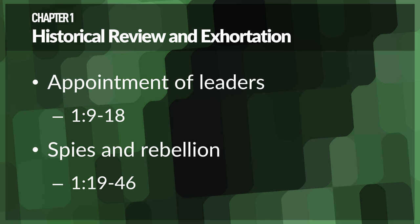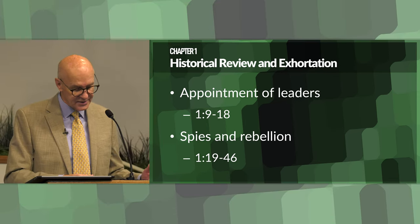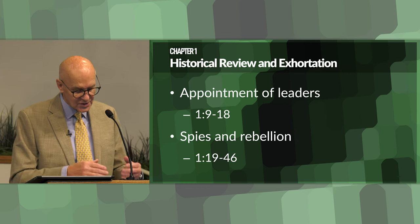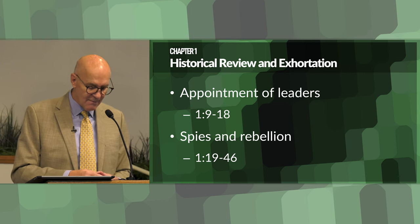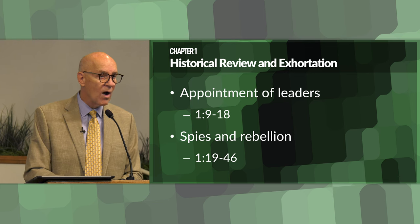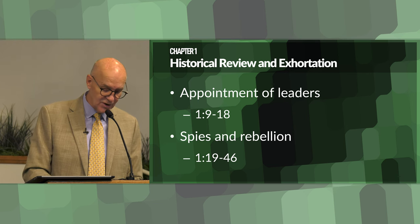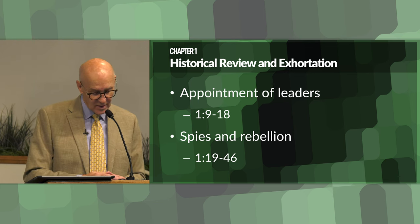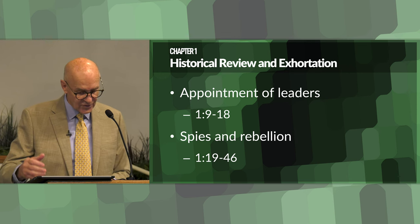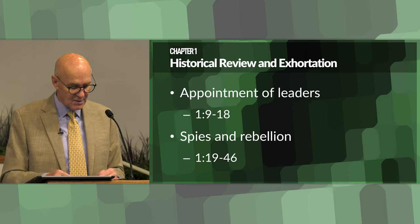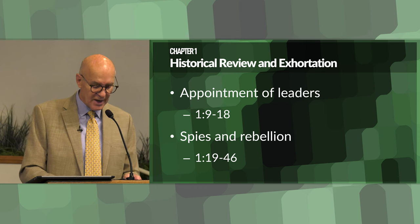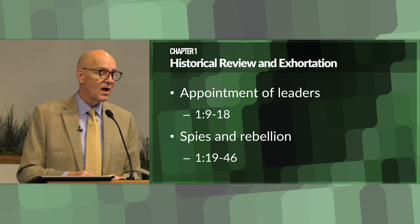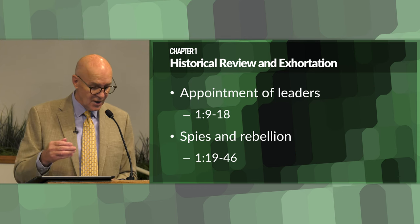Chapter one: historical review and exhortation. First, the retelling of the appointment of leaders — Deuteronomy 1:9–18. Moses recalls how he appointed leaders and judges to help manage and govern the people, emphasizing the need for wise and discerning leadership. The significance: as they stand on the brink of entering Canaan, Moses reminds the people of the importance of just leadership in order to maintain order and justice when they enter and settle the new land.